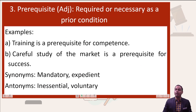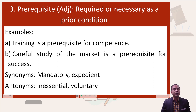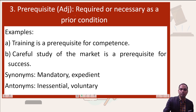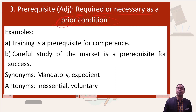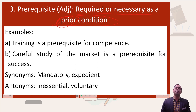The next word in the list is pre-requisite. Requisite means requirement — whatever the basic requirement is. Pre-requisite means something which is required beforehand. For example, if you want to do an MBA, you have to have at least a graduate degree — that is the pre-requisite. Similarly, if you are going to take the CLAT examination, command over reading comprehension is a pre-requisite.